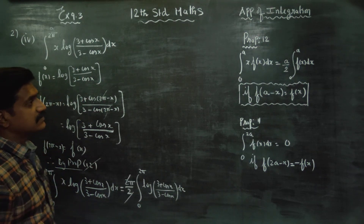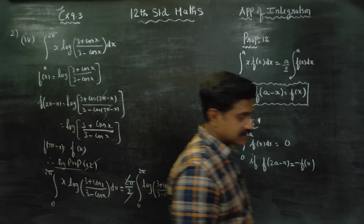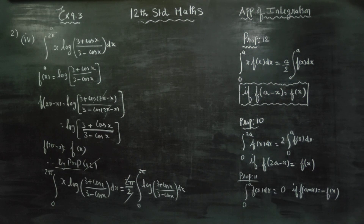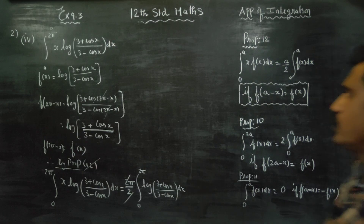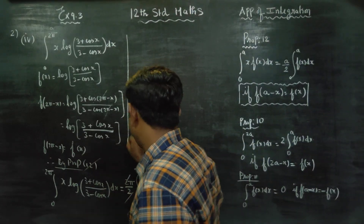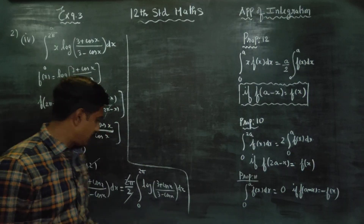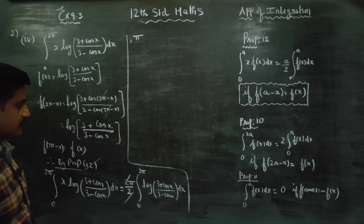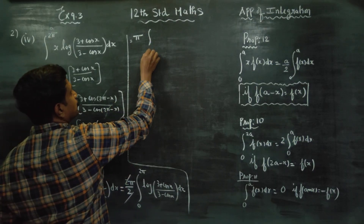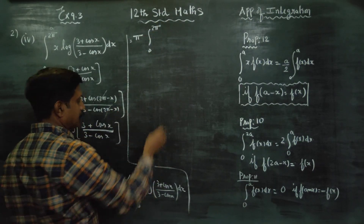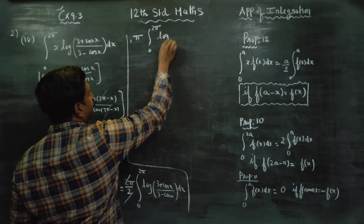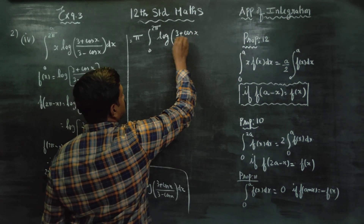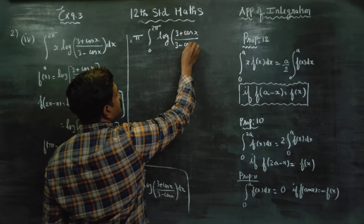So the x cancels out. The answer becomes π·∫₀²π log((3+cosx)/(3−cosx))dx. The 2 cancels with 2π giving π, with limits 0 to 2π of logarithm of (3+cosx)/(3−cosx) dx.